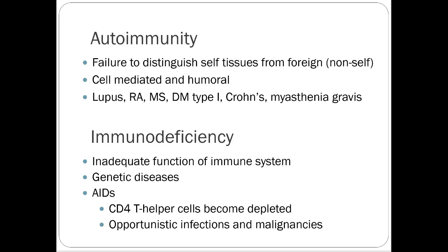Autoimmunity and immunodeficiency — examples of autoimmune diseases we'll discuss include lupus, RA, MS, type 1 diabetes, Crohn's, and myasthenia gravis. We'll cover certain aspects of some in more detail than others throughout the course, but most of them won't be covered today.